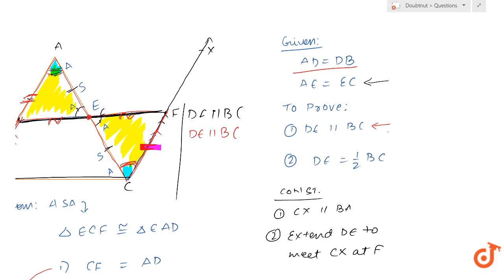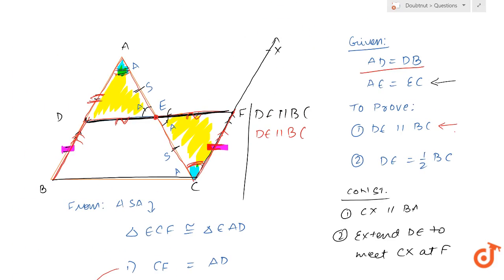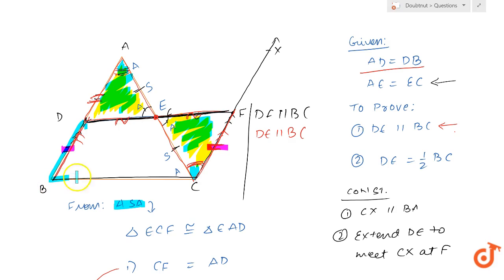So to summarize: we first proved the two triangles congruent by ASA, and then we showed the quadrilateral BDFC to be a parallelogram, which gave us that DE is parallel to BC and DE is equal to half of BC.